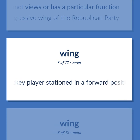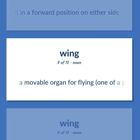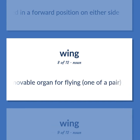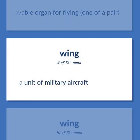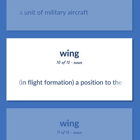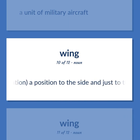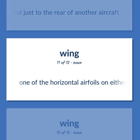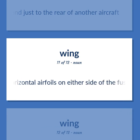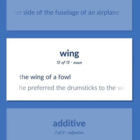Wing: A hockey player stationed in a forward position on either side. A movable organ for flying, one of a pair. A unit of military aircraft. In flight formation, a position to the side and just to the rear of another aircraft. One of the horizontal airfoils on either side of the fuselage of an airplane. The wing of a fowl. Example: He preferred the drumsticks to the wings.